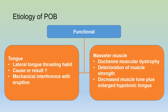Regarding functional problems, when there is a lateral tongue thrusting habit, this can result in a posterior open bite because the tongue interferes with the eruption of the teeth — though it is not clear whether the tongue thrusting causes the posterior open bite or is the result of it. Another factor is the action of the masseter muscle. In conditions such as Duchenne muscular dystrophy, there is weakness of the masseter muscle and decreased muscle tone, and combined with an enlarged hypertonic tongue, this together causes a posterior open bite.